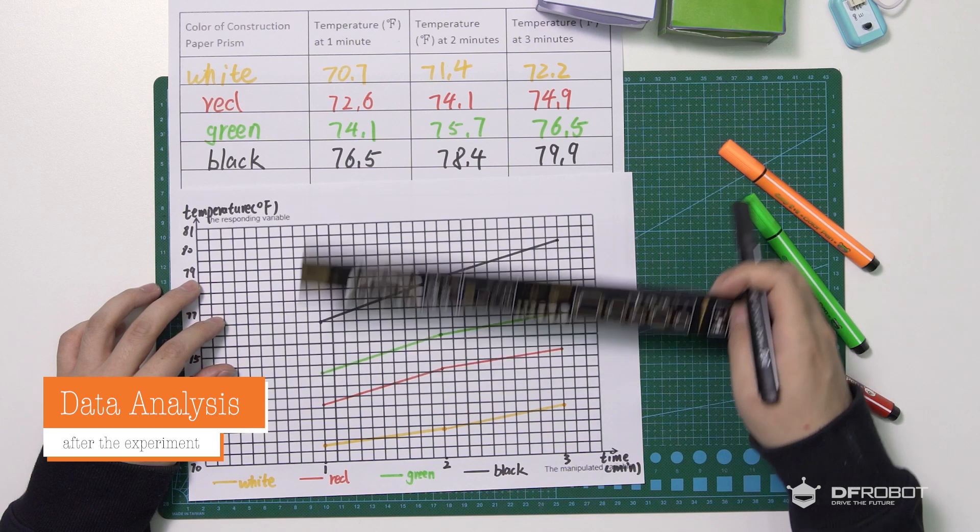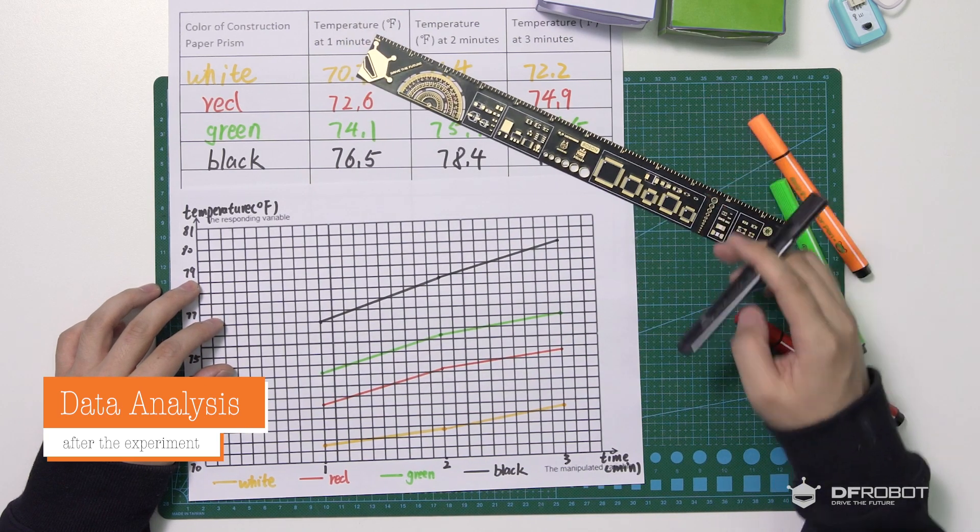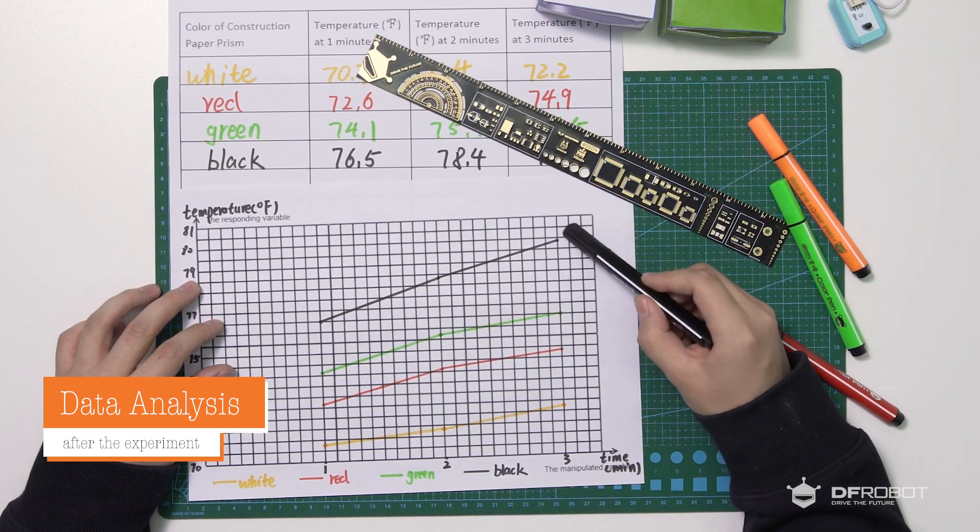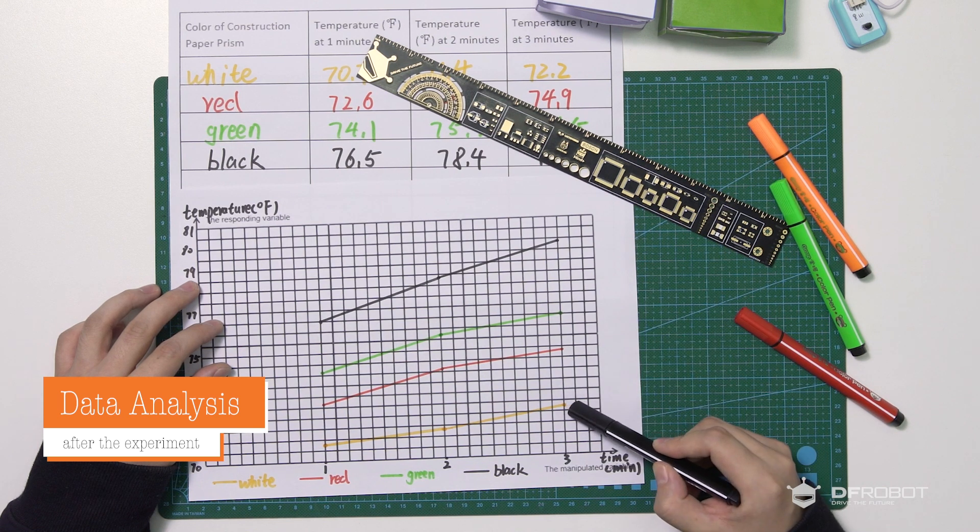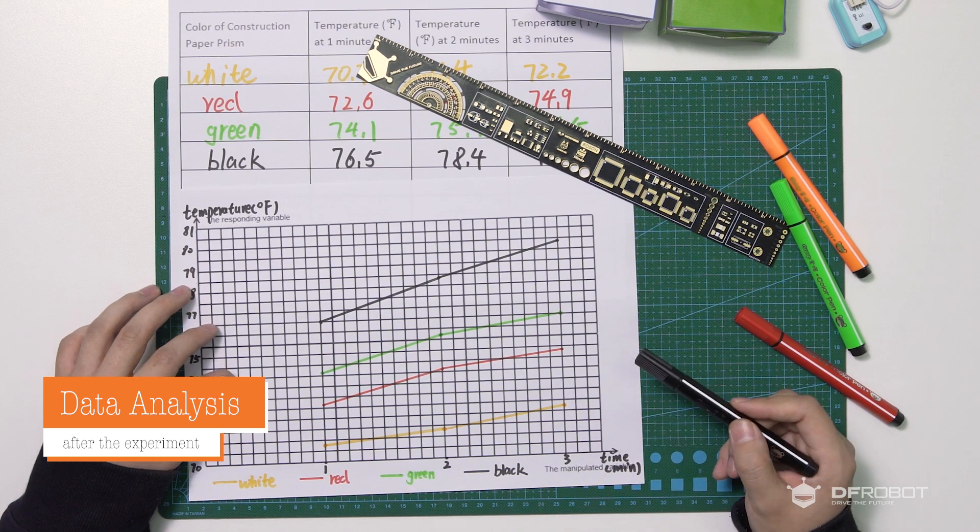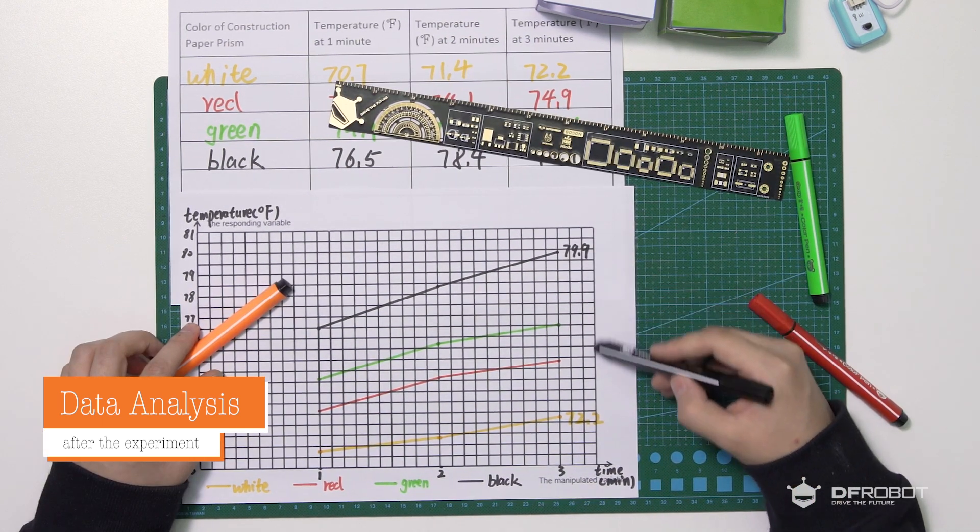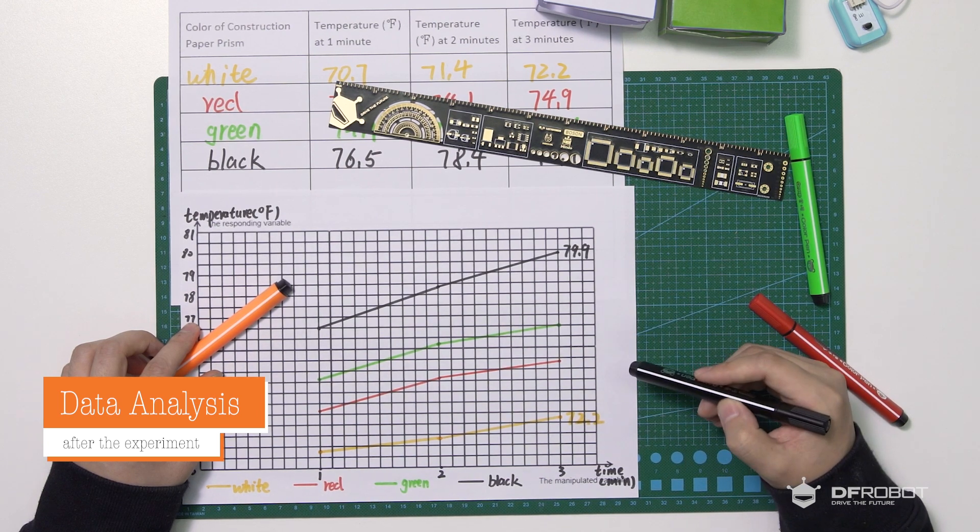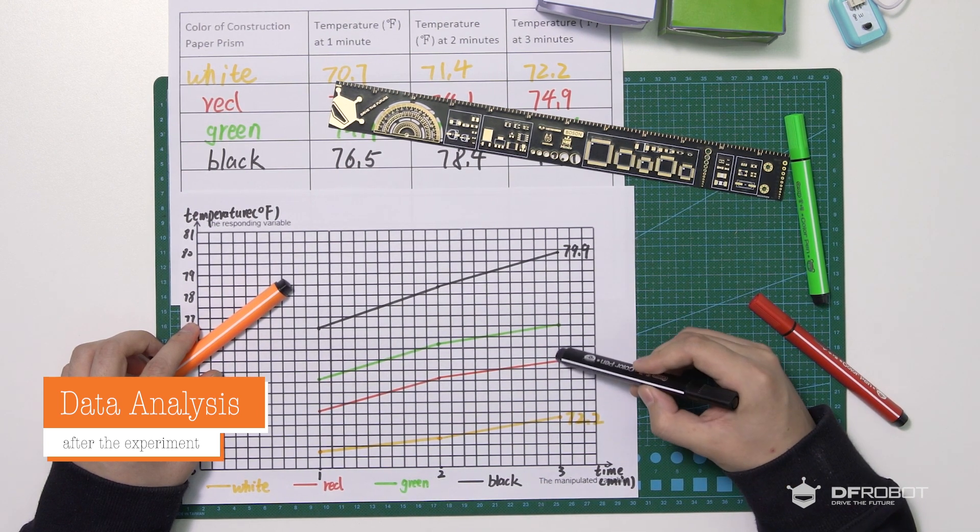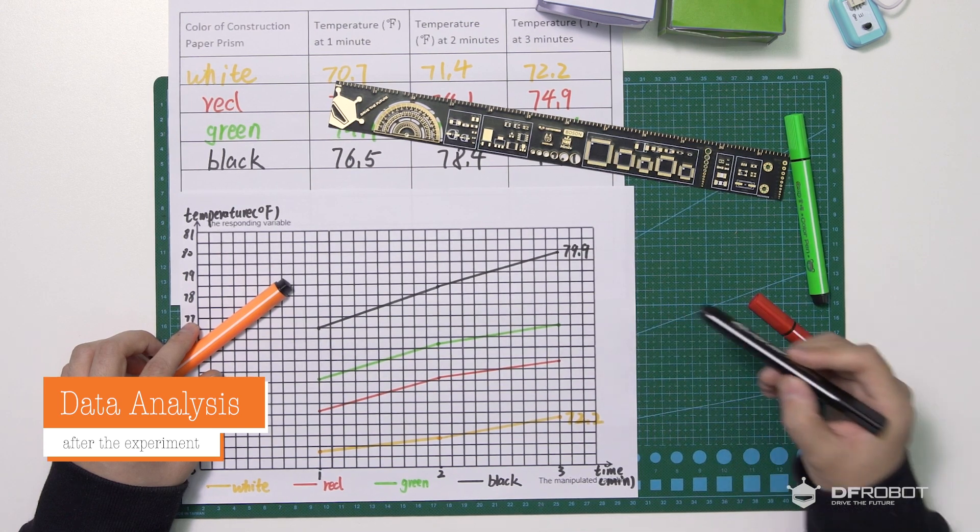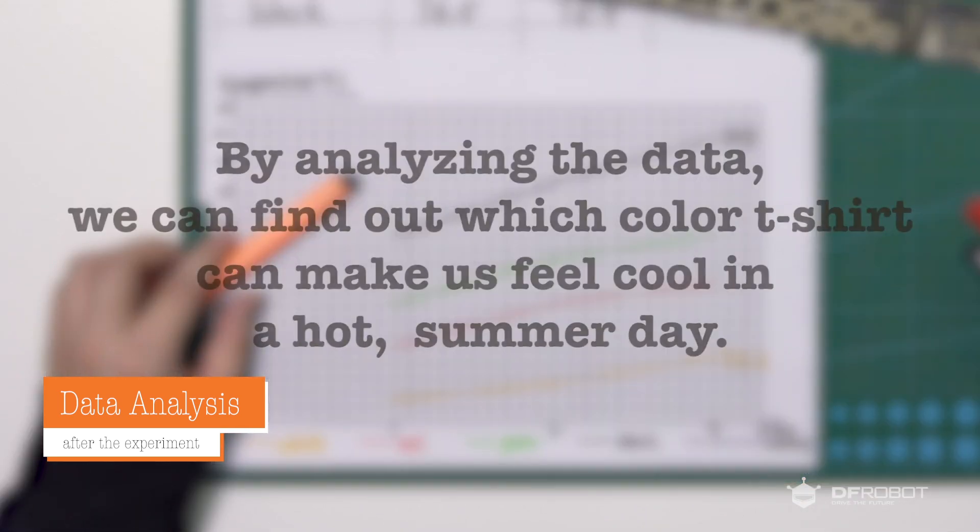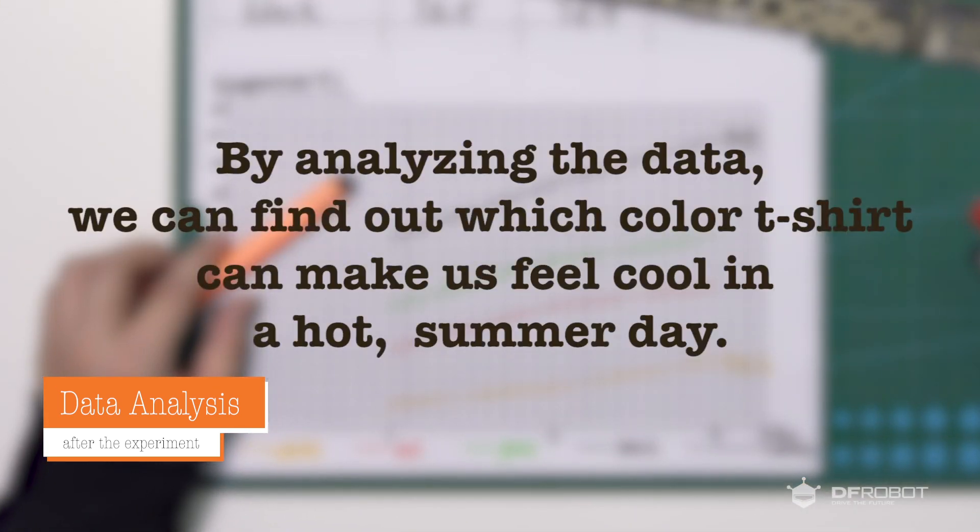Use a different color that matches the color of the construction paper for each line. We can examine the multicolored line graph to find which color recorded the highest or the lowest temperature reading in three minutes, which two lines appear to be the farthest apart, or the closest together. By analyzing the data, we can find out which color t-shirt can make us feel cool in a hot summer day.